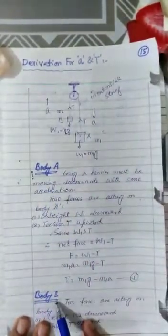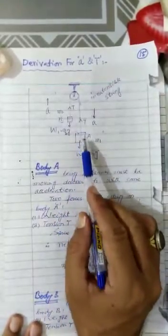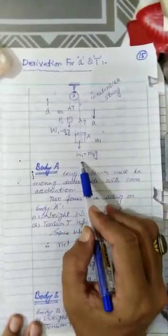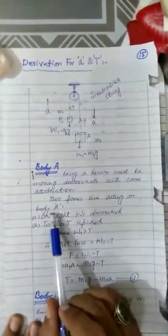Now girls, we are discussing about body A and then we will discuss about body B. Body A being a heavier mass moving downwards with some acceleration. Since mass is greater, so this body A will move vertically downward.